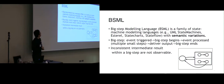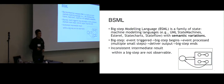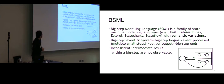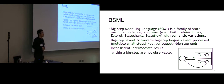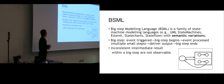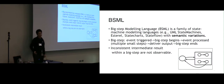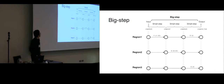The other side: BSML. It is a family of state machine model languages with semantic variations. The semantic variations are the basis of our configurable semantics. A big step starts with an event being triggered, and then the events are processed with multiple small steps. After all the small steps end, the big step is done and we deliver an output. One important trait of BSML is that we allow inconsistent intermediate results within a big step, because the effects are not observable until the end of a big step. Here we have an illustration of the execution of the big step.